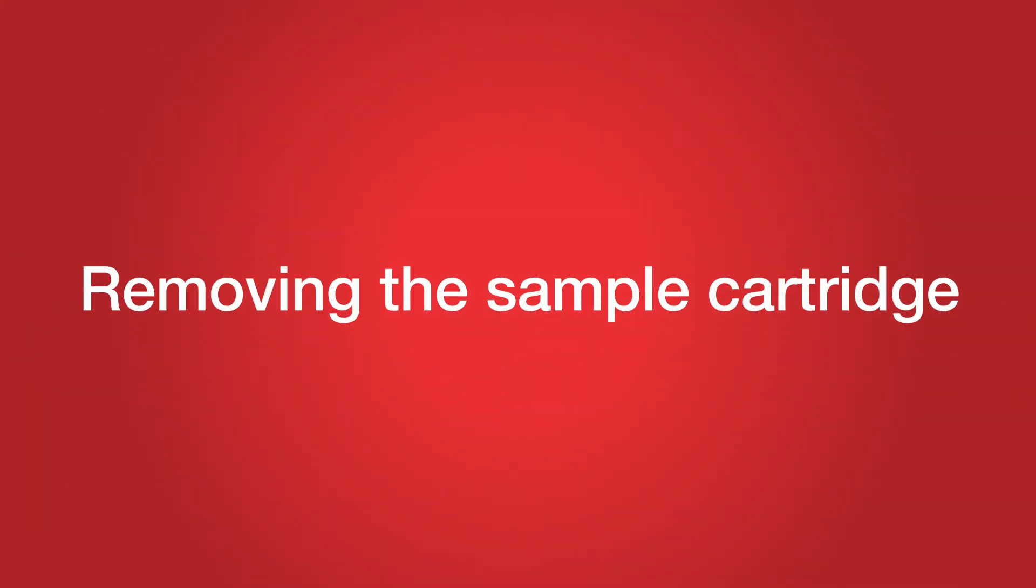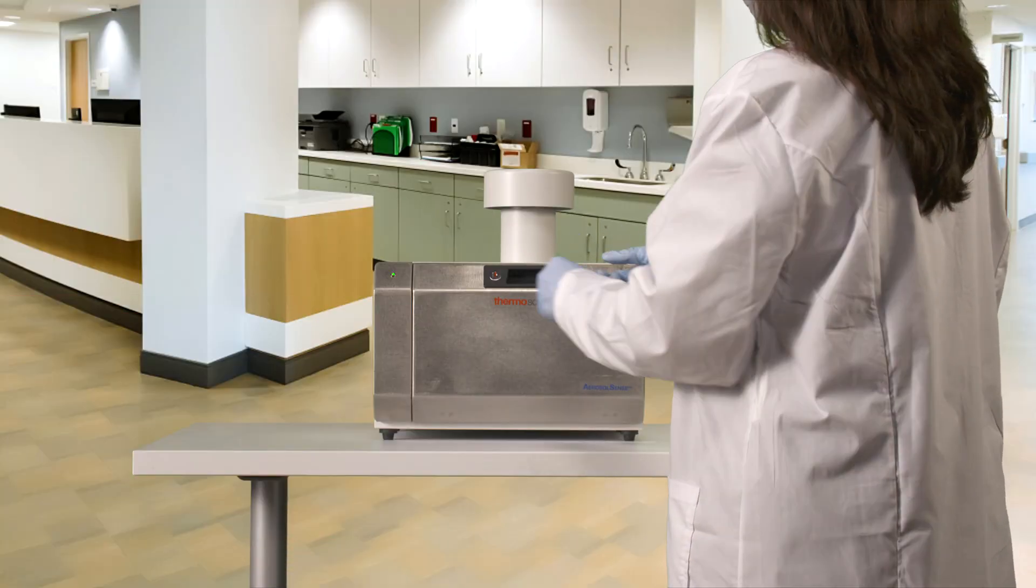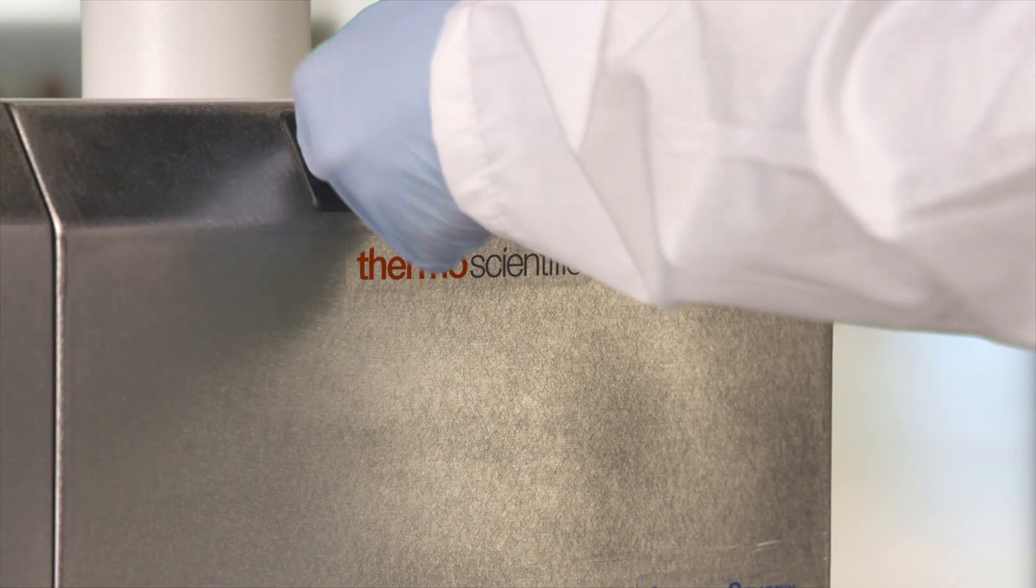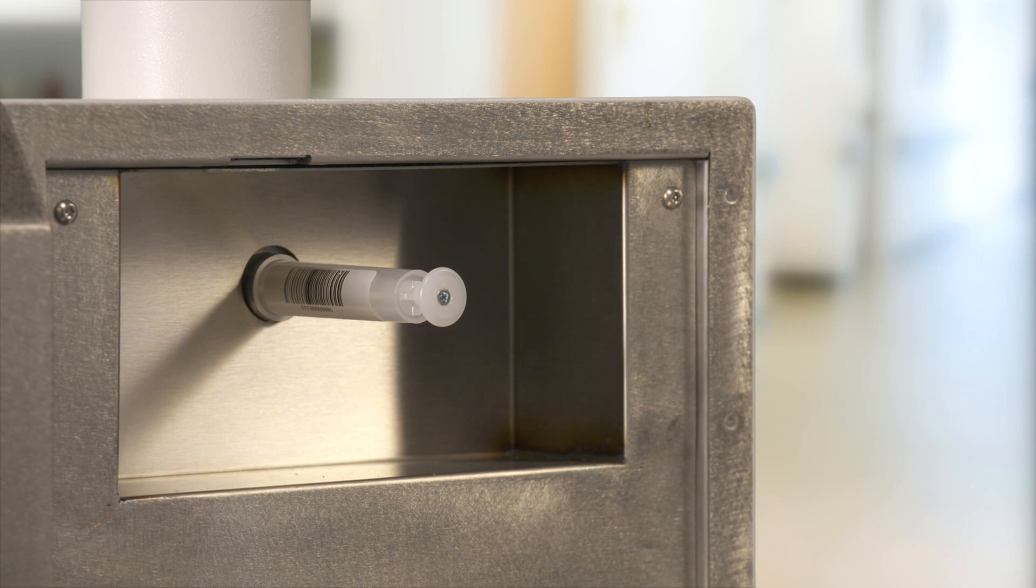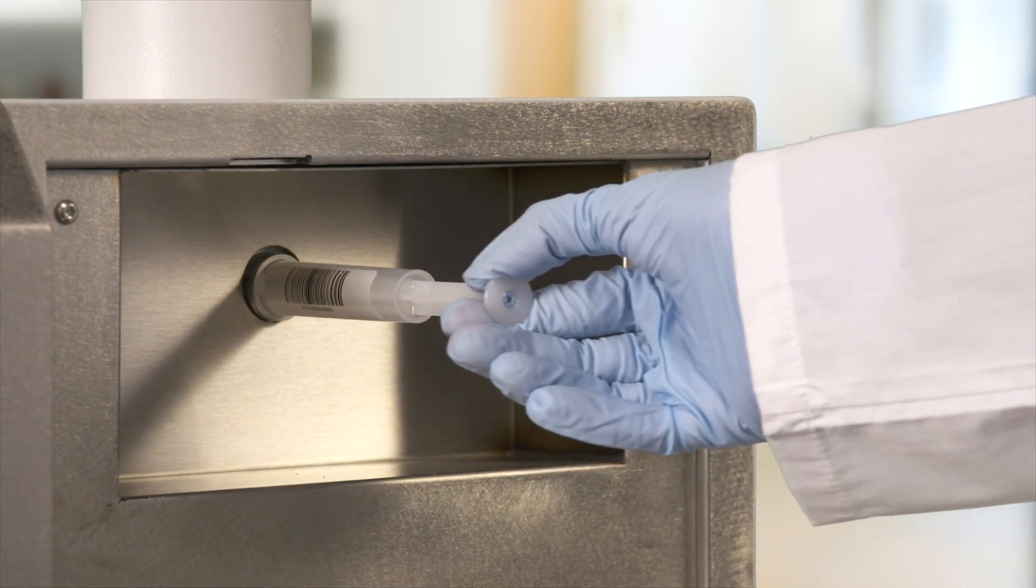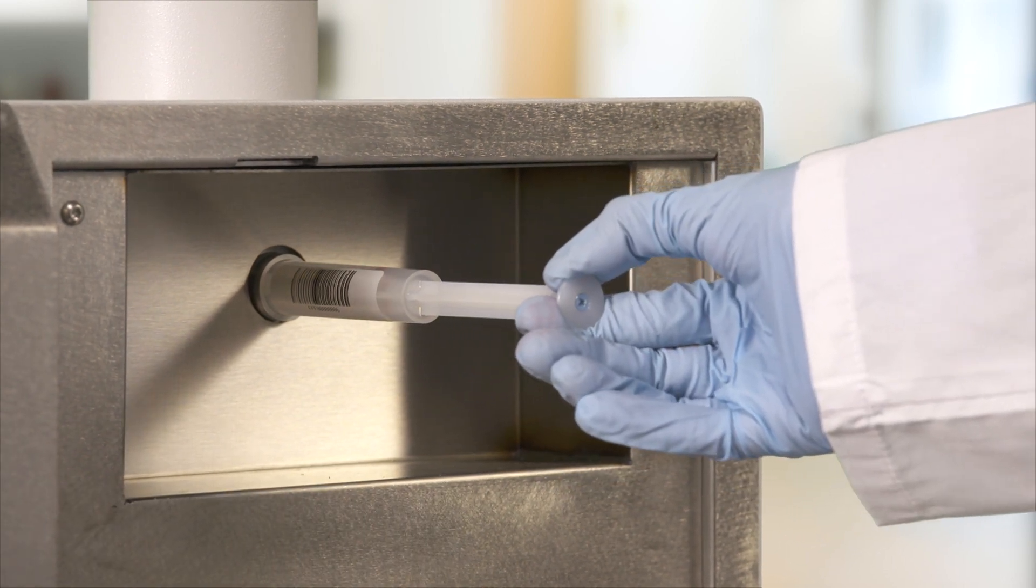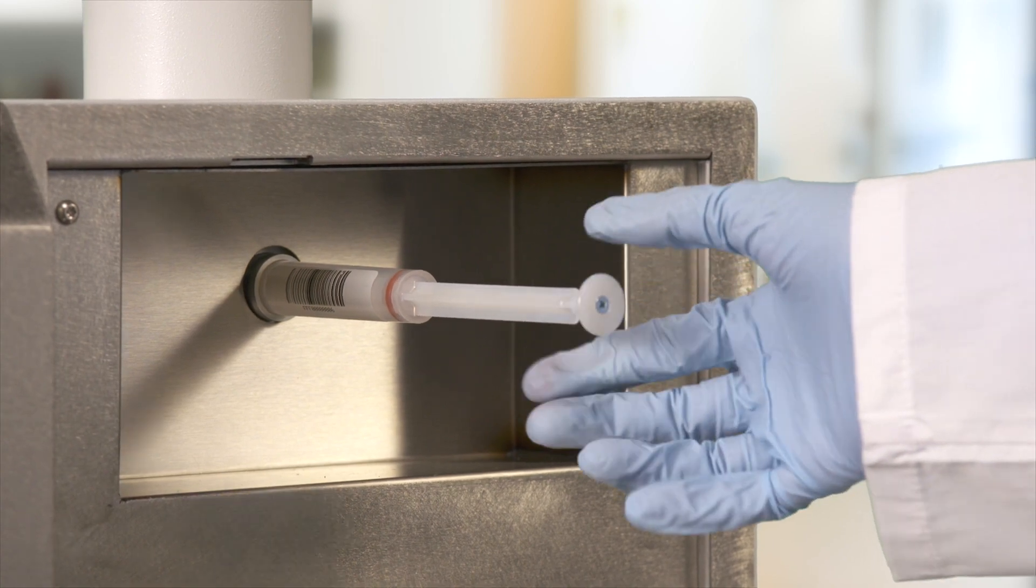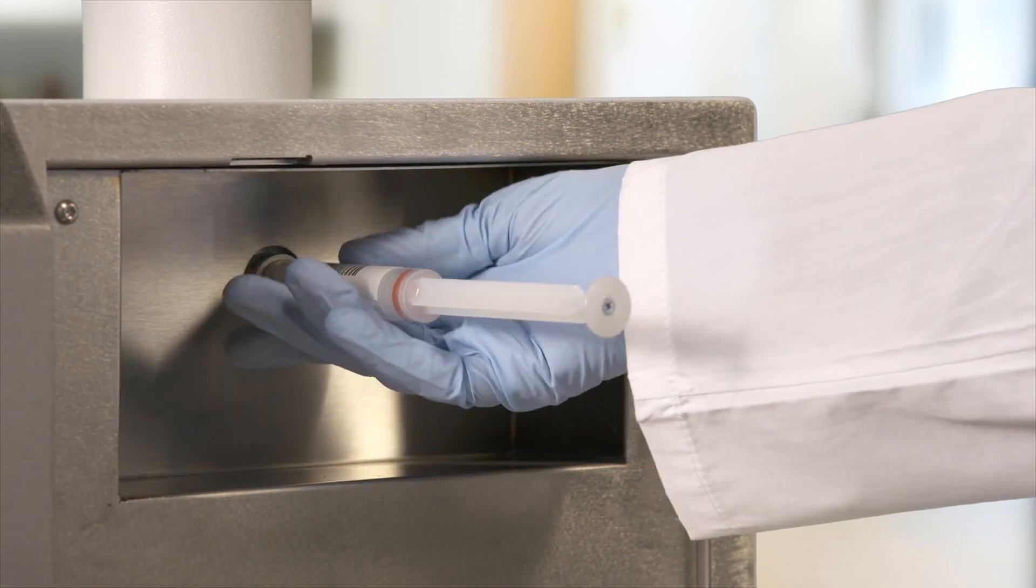Once the sampling time has elapsed, open the front door with the included key. Pull the plunger all the way out. Turn the sample cartridge counterclockwise until it disengages.